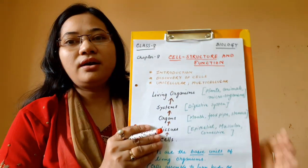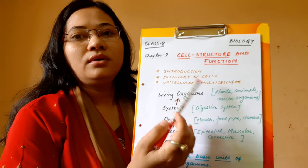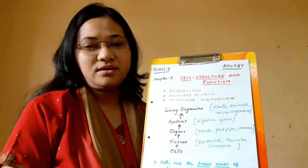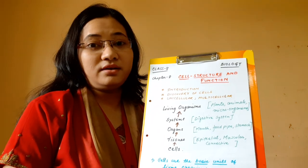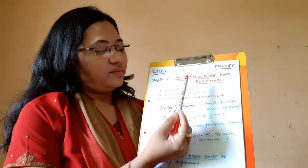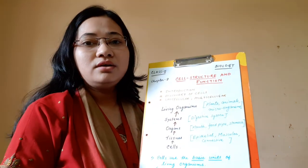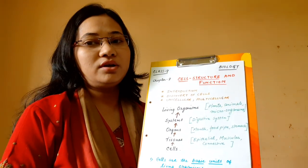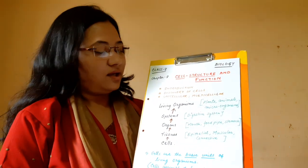Good morning everyone. Today we are going to study Biology for Class 8, Chapter 8: Cell Structure and Function. You may have read about a 'cell' in physics — a device that stores chemical energy — but that cell is different from this cell. This cell is the smallest basic unit of our body.